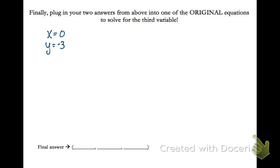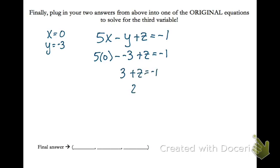Since we're solving for z, I think the top equation looks like it would be the easiest. So we're going to copy that equation down, plug in 0 and negative 3, solve for z, and then we have all three solved for.